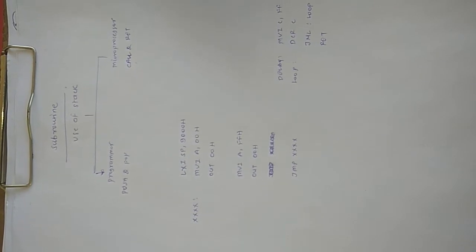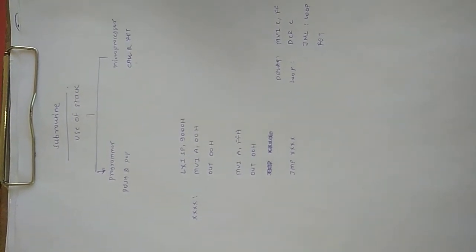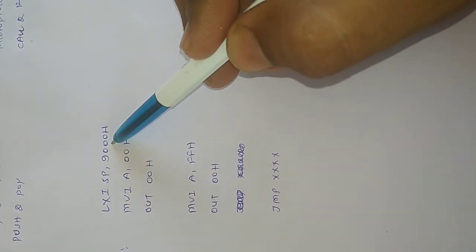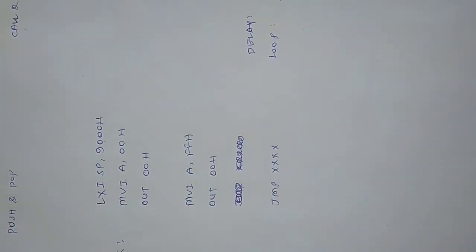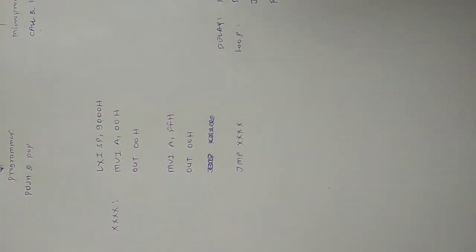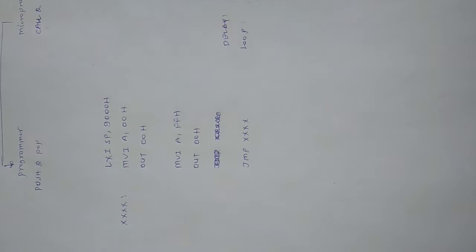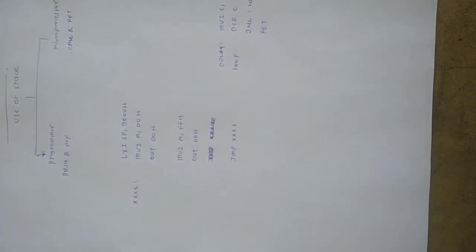Now we'll check out how exactly subroutines are implemented in the main program. I have written one program here. The stack pointer is initialized at memory location 9000h. Stack pointer is usually assigned at the highest memory location possible because stack locations are used for temporary storage of data or memory locations.